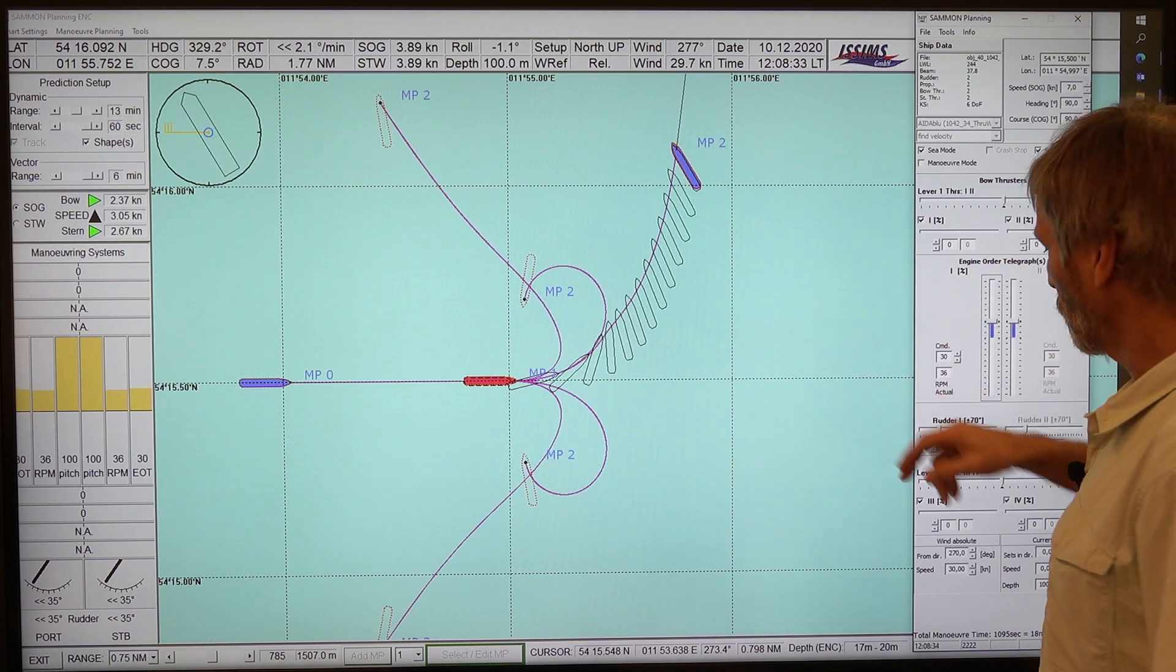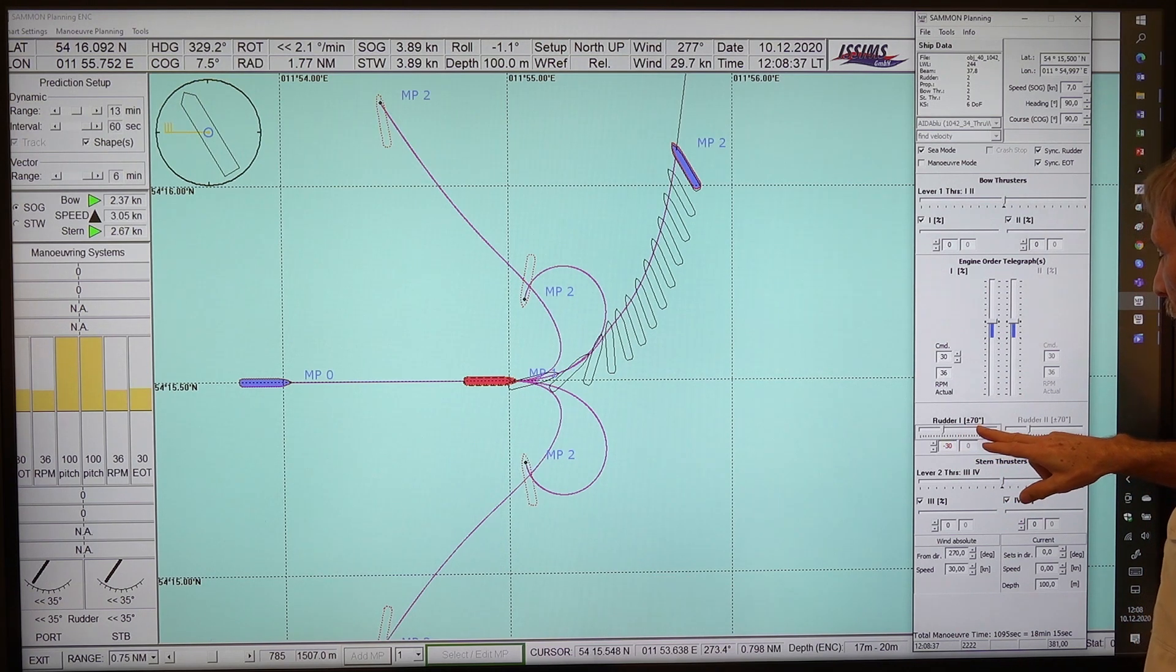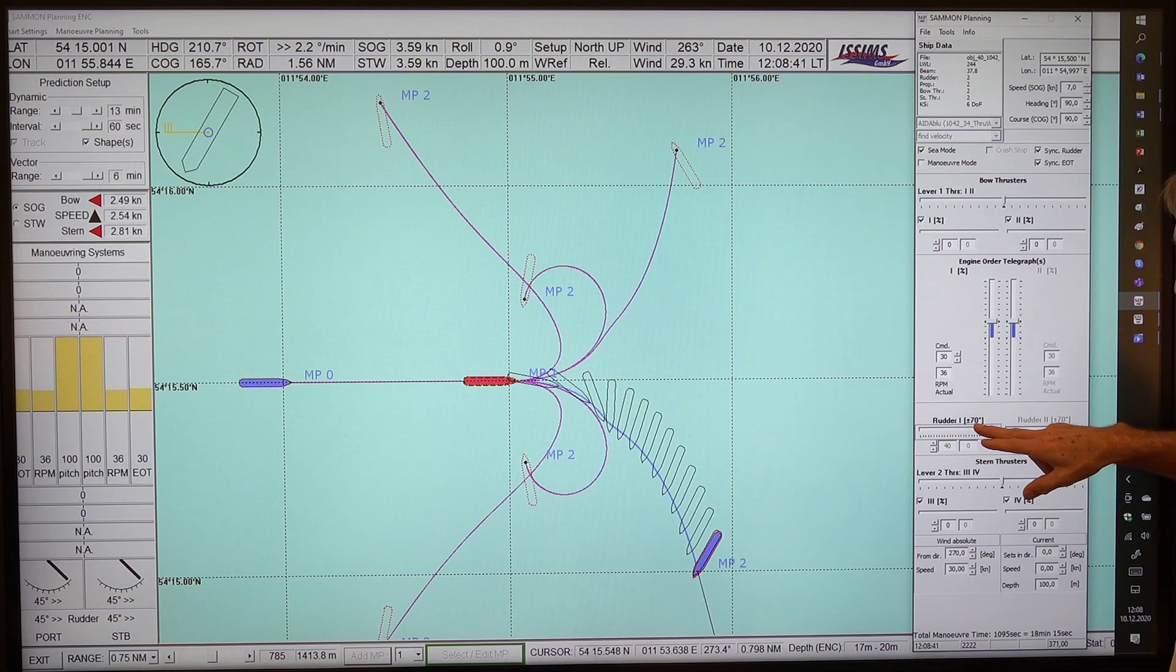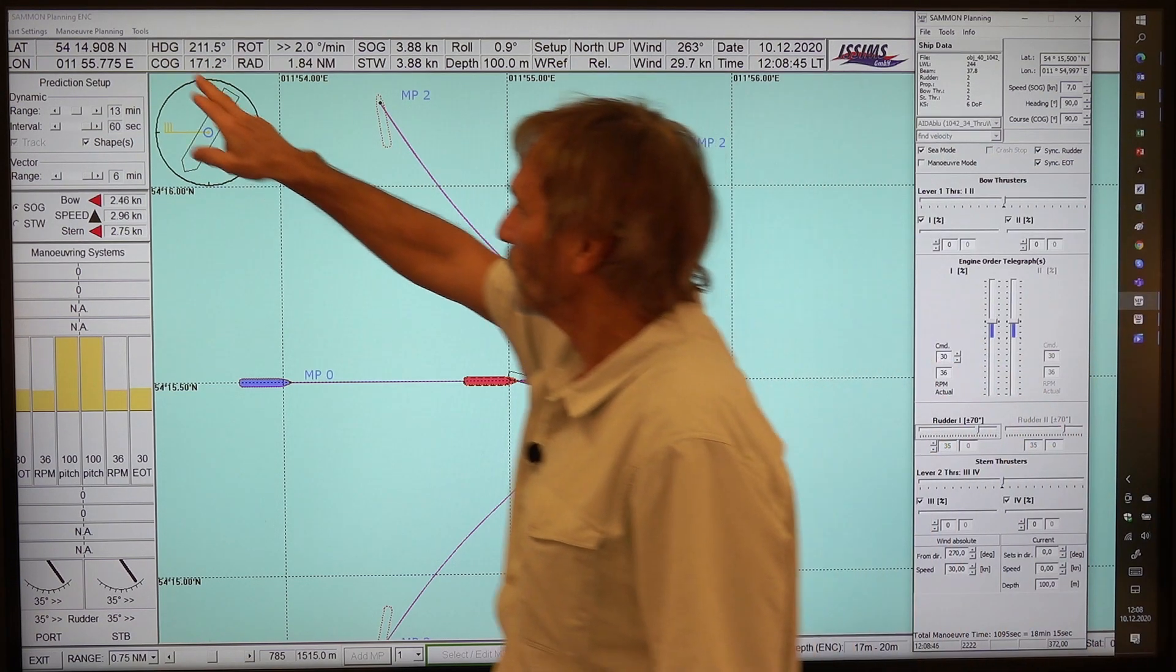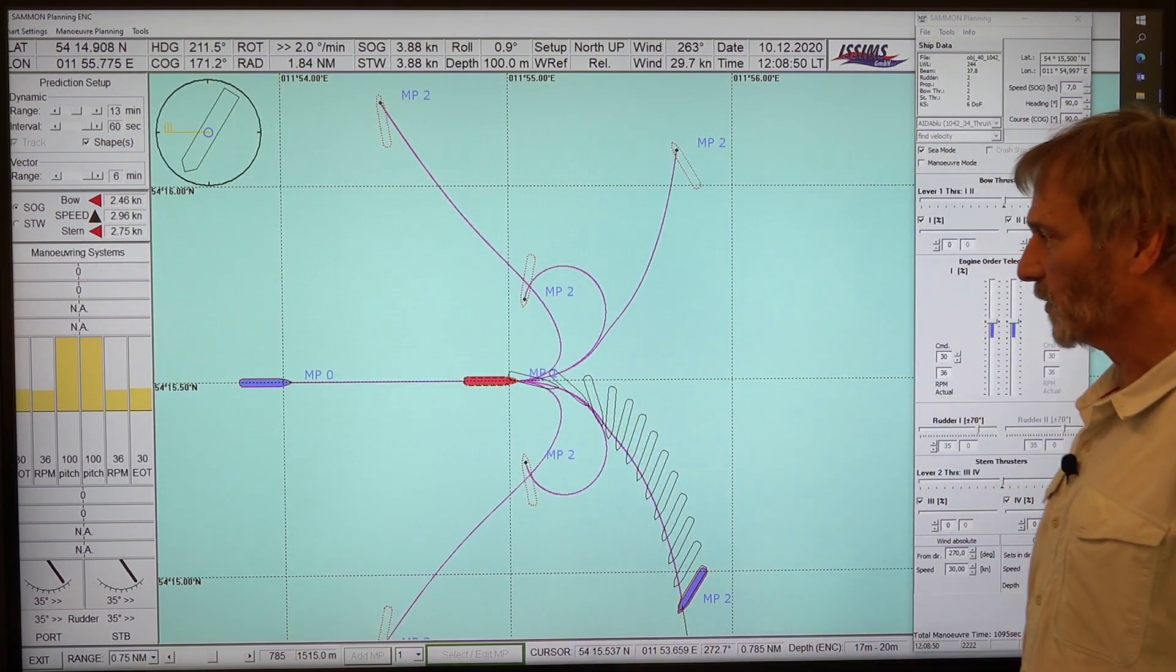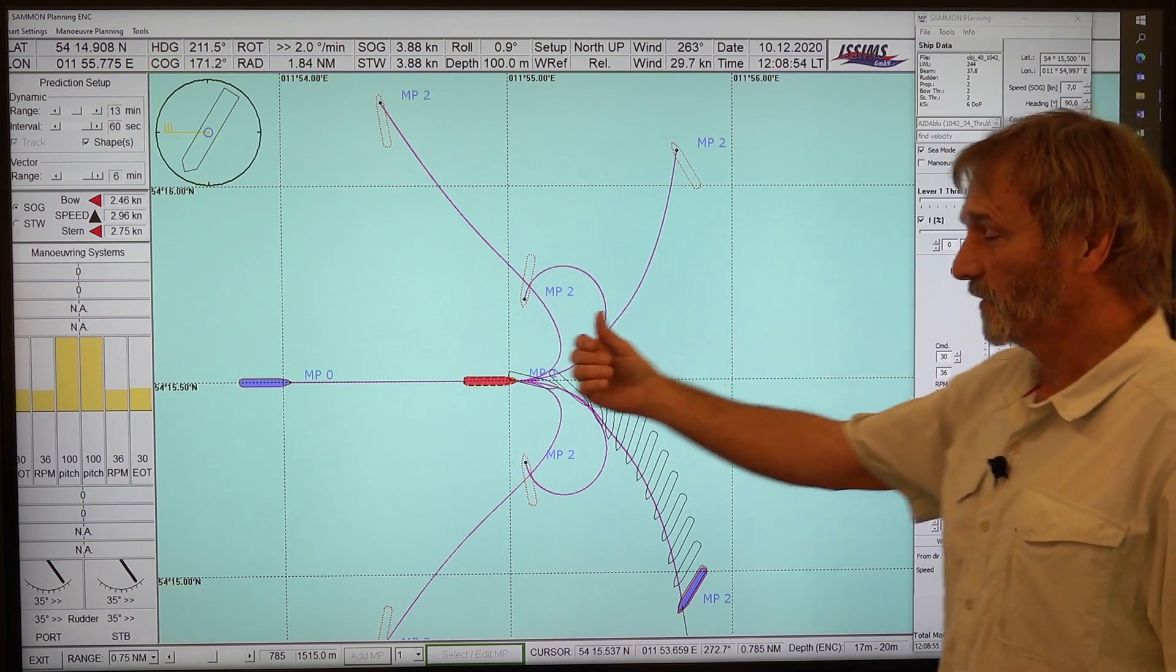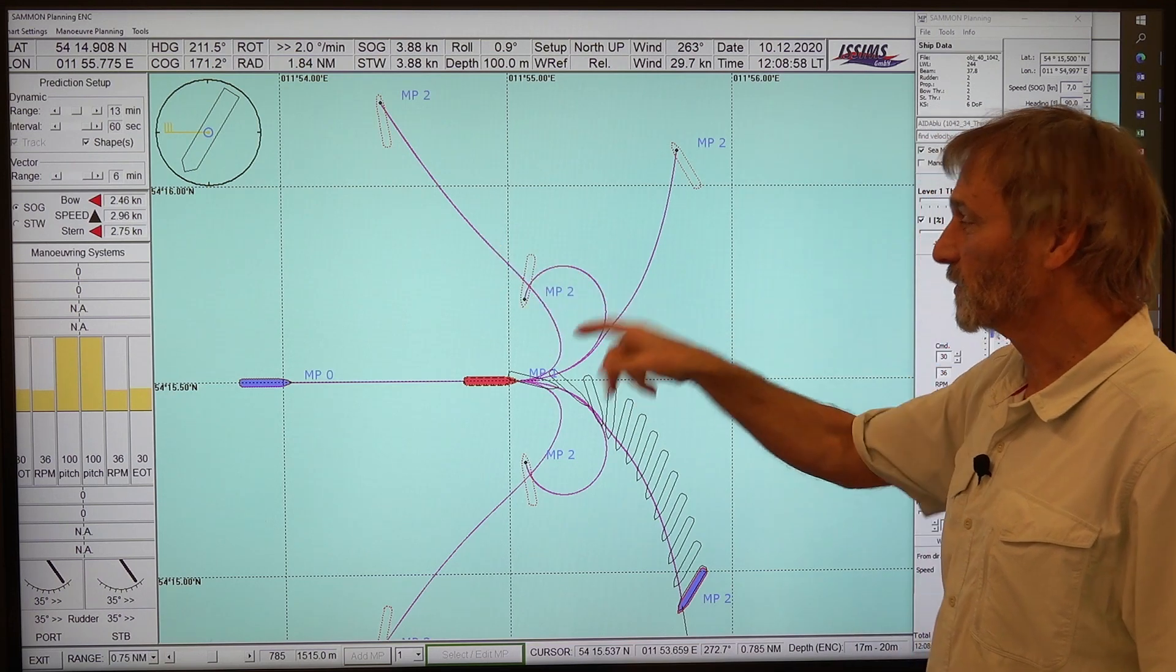So we also could go to the other side to make it to plus 35. So this is the reference track to the other side only to complete our picture. Then we have all the magenta curves here. This was for stern wind. This was for headwind. And this is with no wind, our reference.